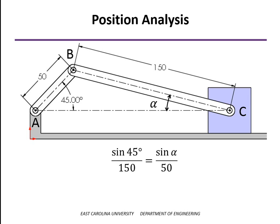So the sine of 45 degrees over the opposite side of that angle, 150 millimeters, is equal to the sine of alpha over its opposite side of 50 millimeters. We solve that for alpha as a little over 13 and a half degrees.